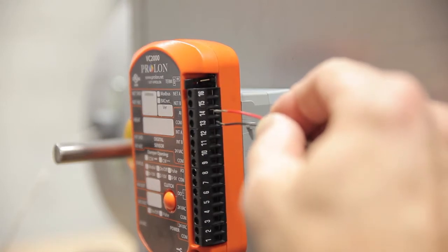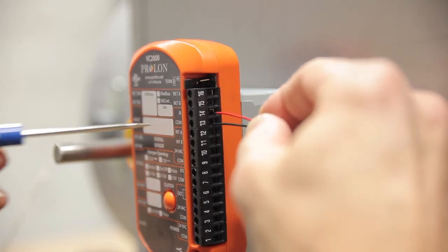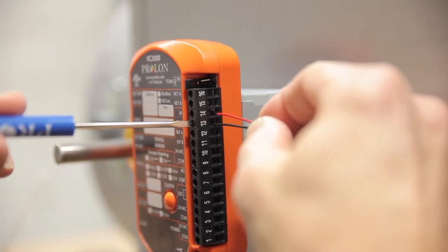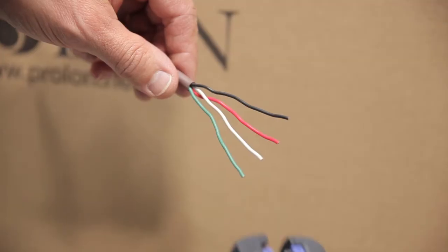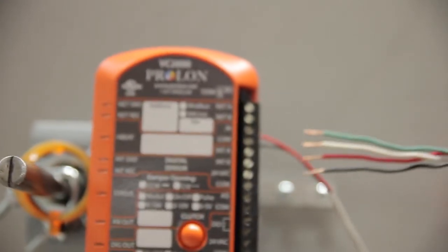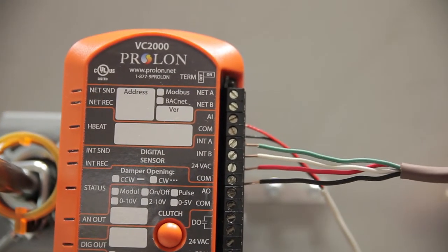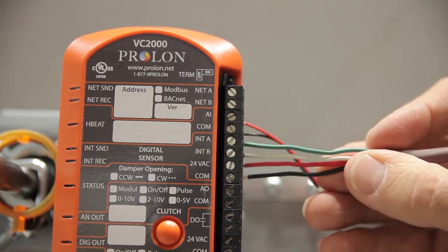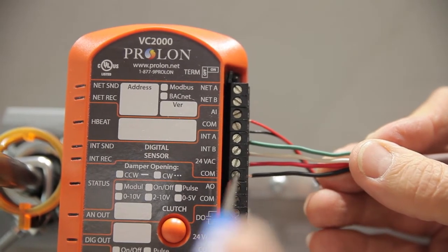Now wire the duct sensor to the analog input on terminals 13 and 14. Using a four conductor cable, connect the digital wall sensor to the controller. All Prolon digital wall sensors have identical wiring terminals so they all hook up the same way.